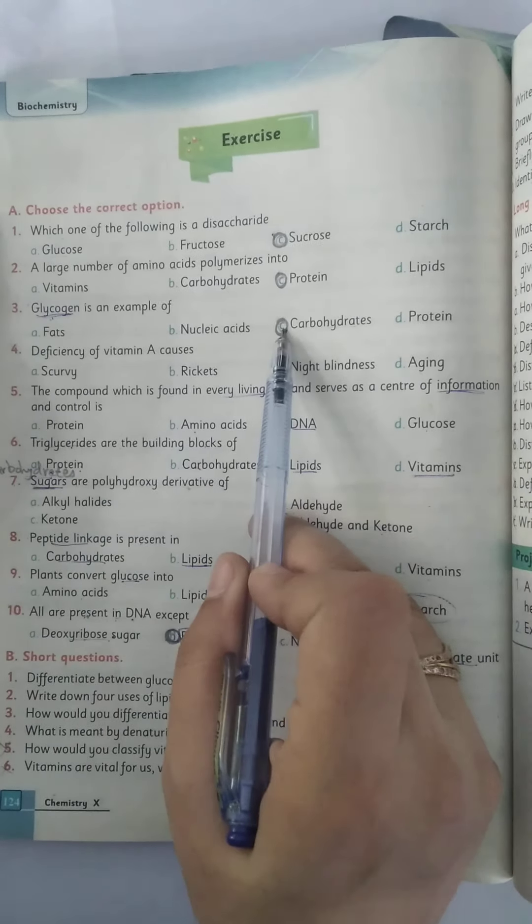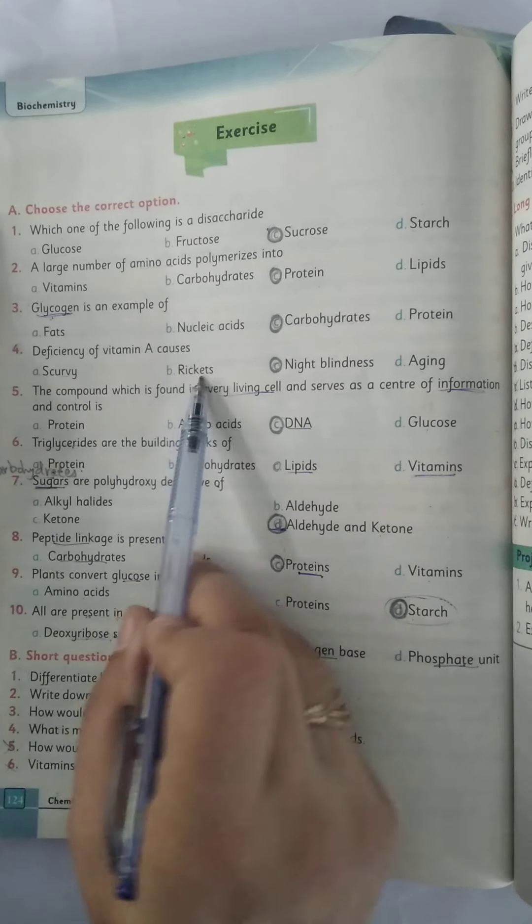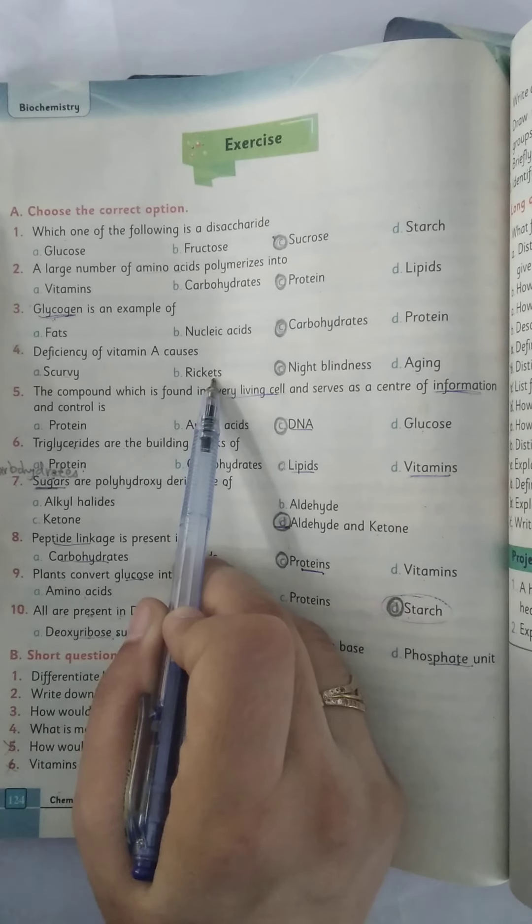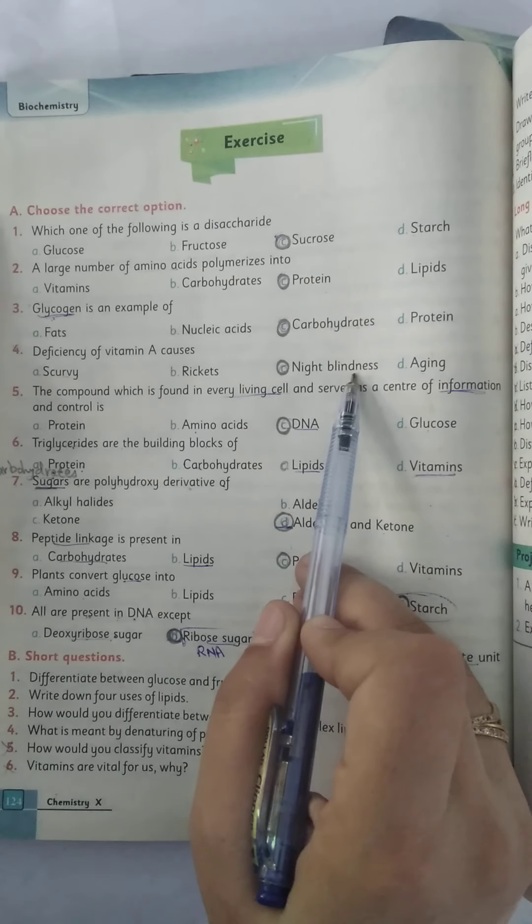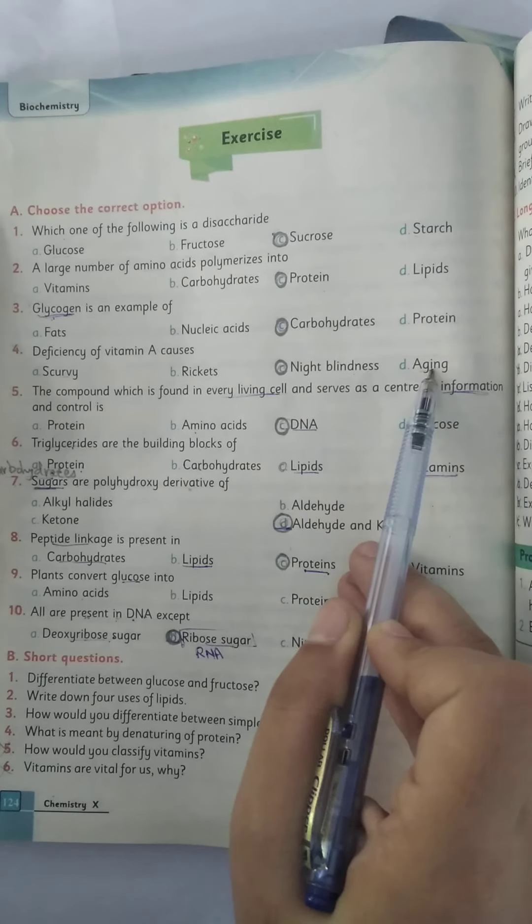Deficiency of vitamin A causes scurvy, rickets, night blindness, aging. Scurvy is caused by deficiency of vitamin C, rickets by deficiency of vitamin D, night blindness by deficiency of vitamin A, and aging is caused by deficiency of vitamin E. So the correct option is night blindness.